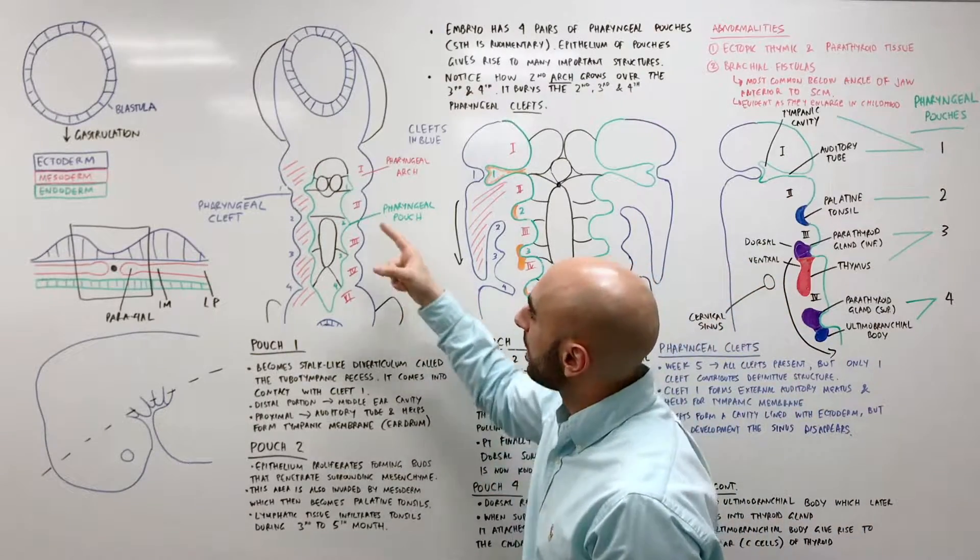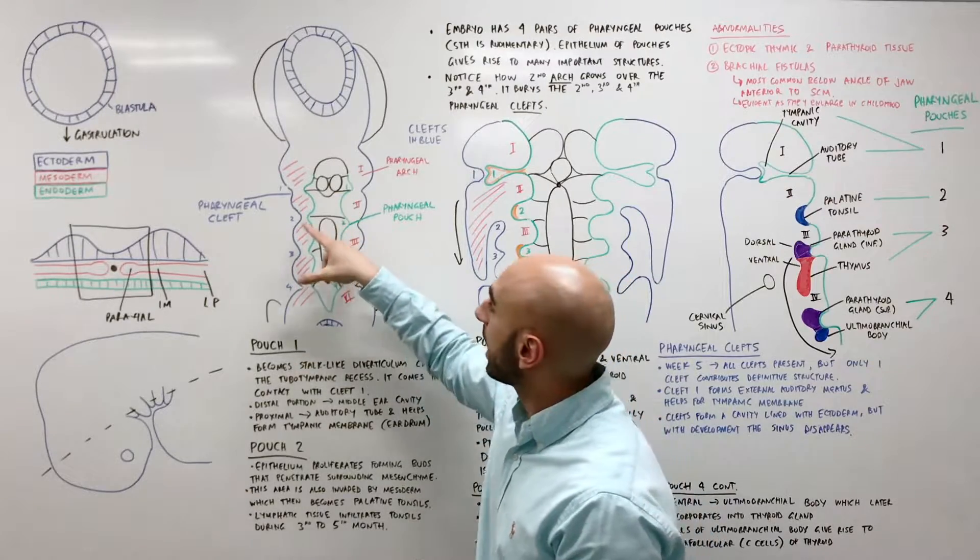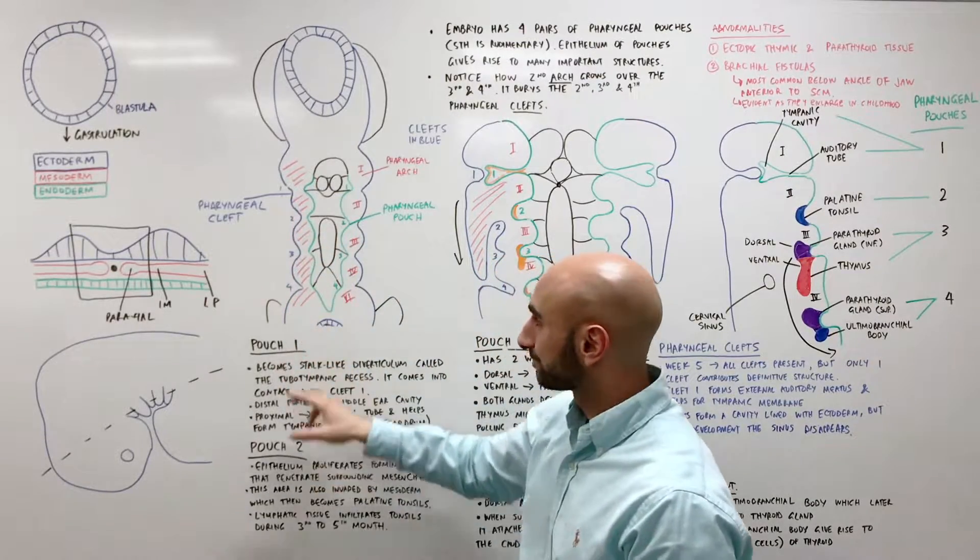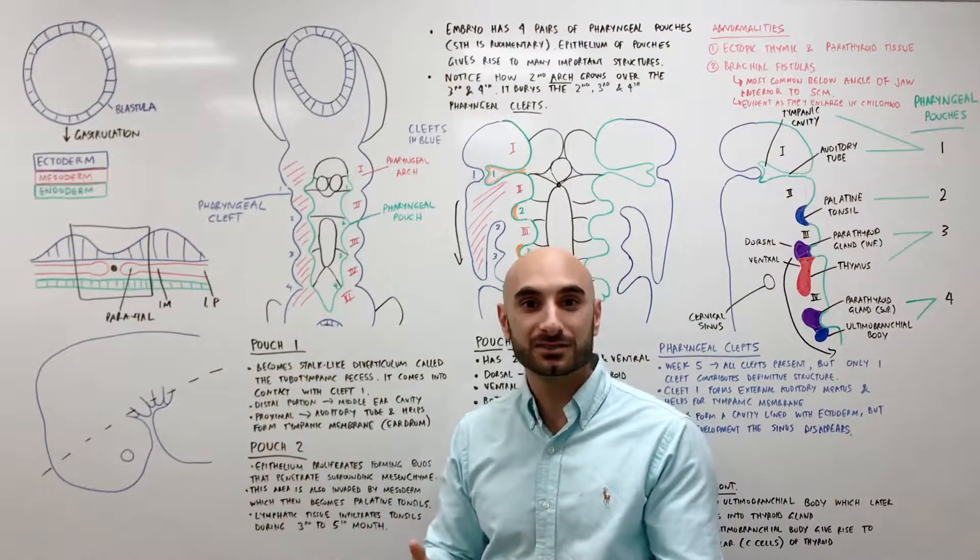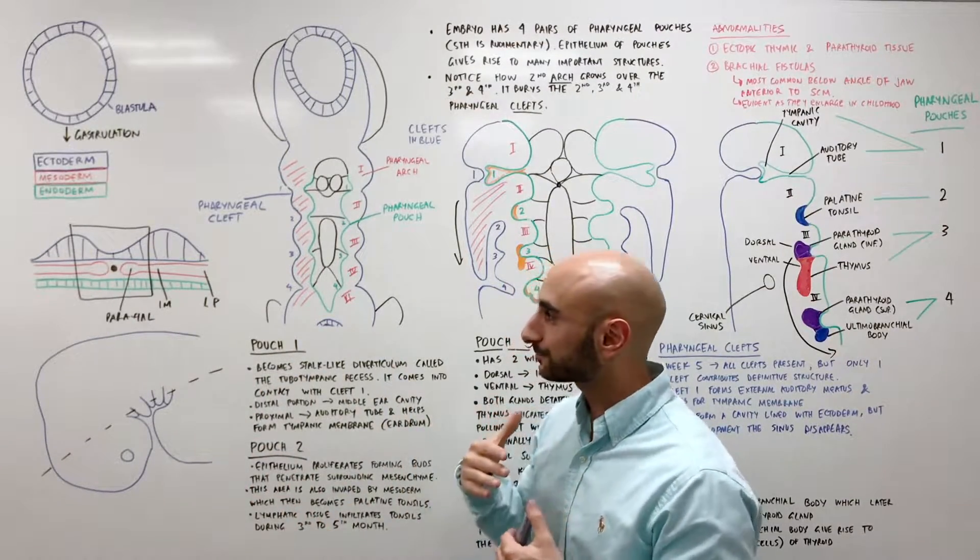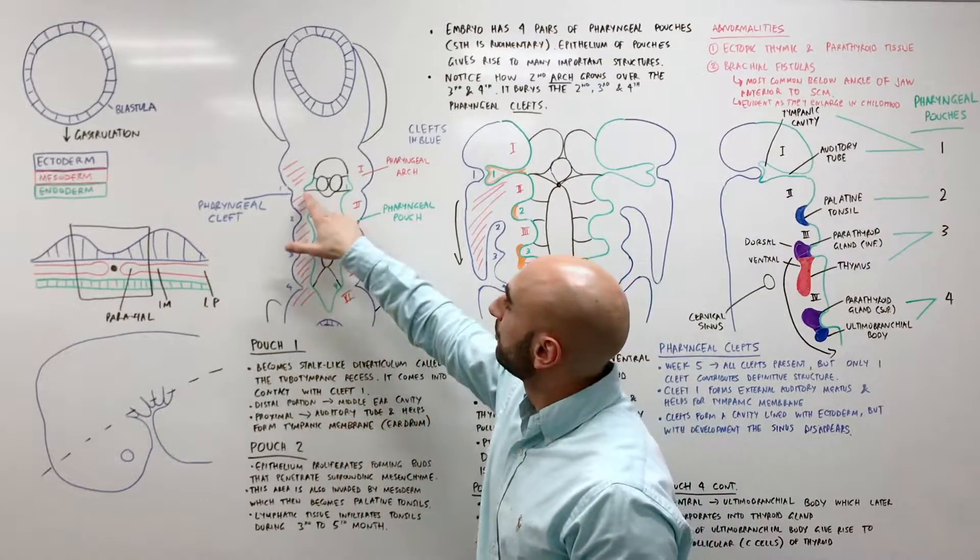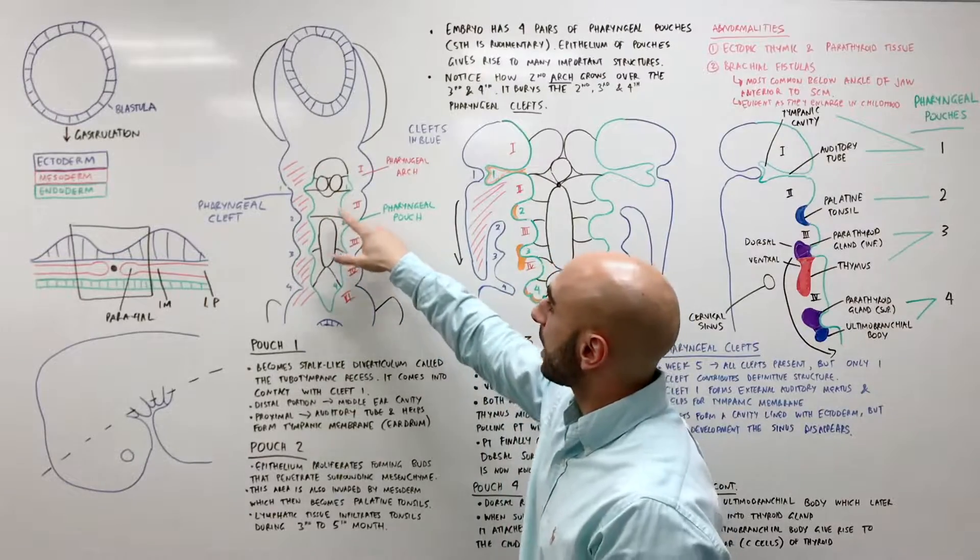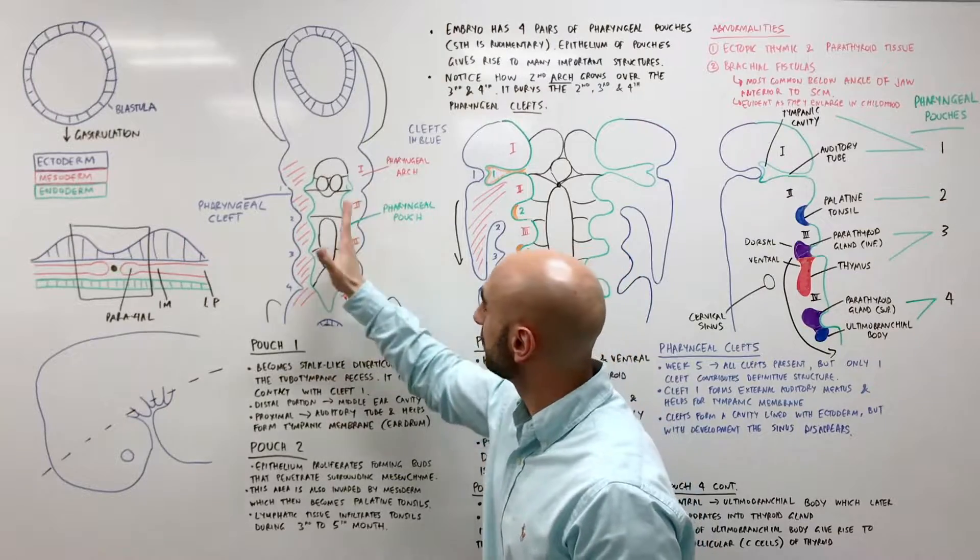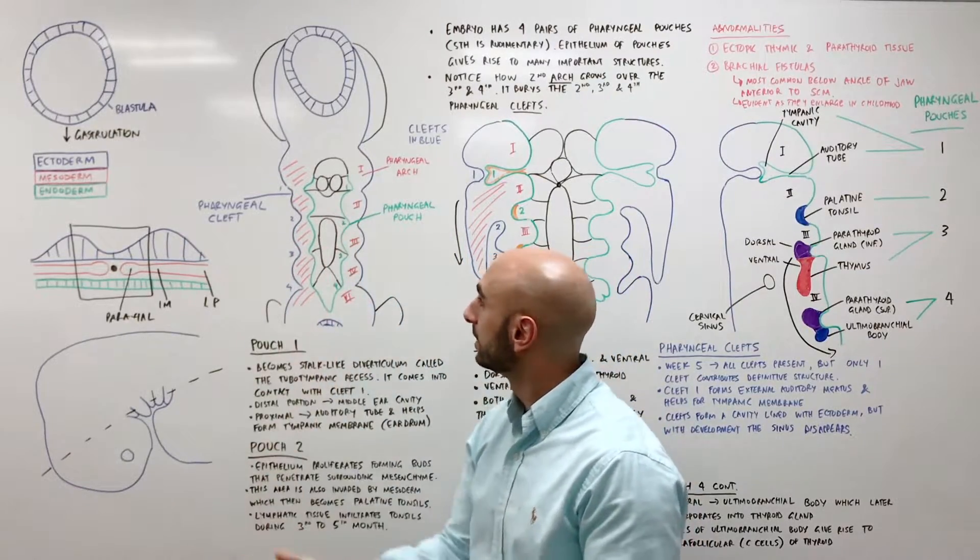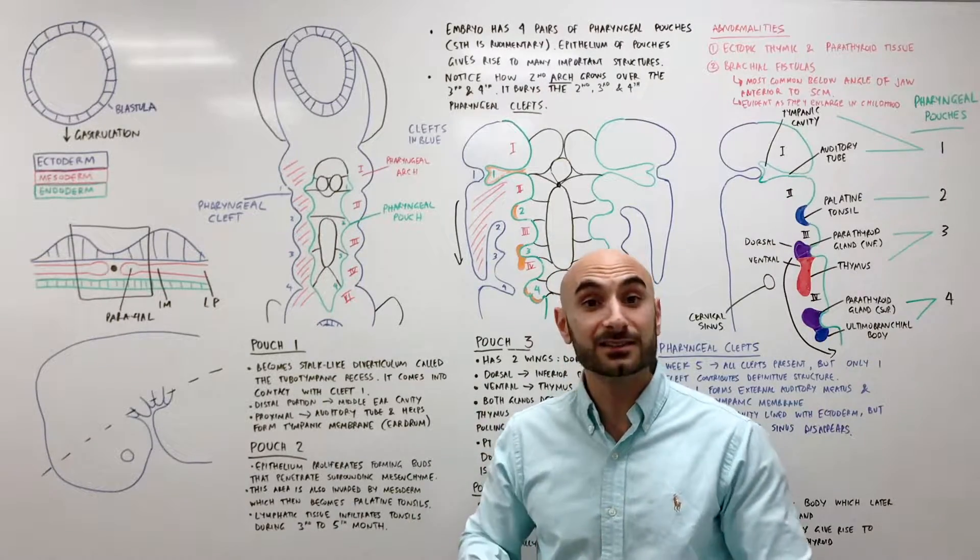A good way to remember that pouches are on the middle or on the inside and that the clefts are on the outside is that pharyngeal cleft, C for cliff, cliff face is on the outside or C for covering, covering is on the outside. A good way to know that the pouch is on the inner side or in the middle bit or in the inside is that a kangaroo has a pouch and the joey goes on the inside in the pouch. So P for pouch, kangaroos have a pouch inside.